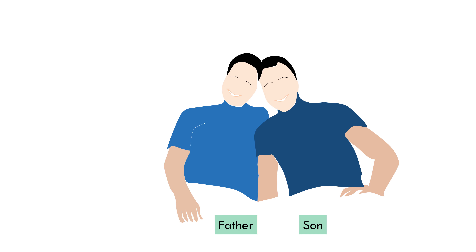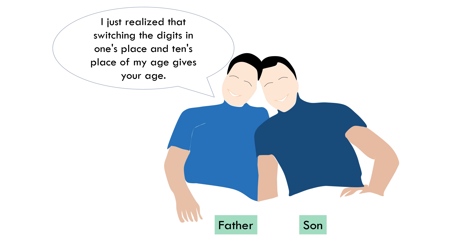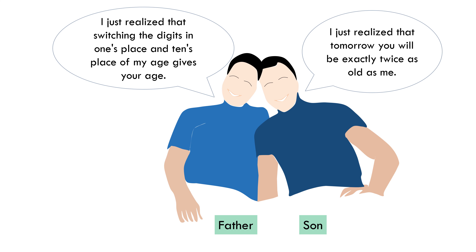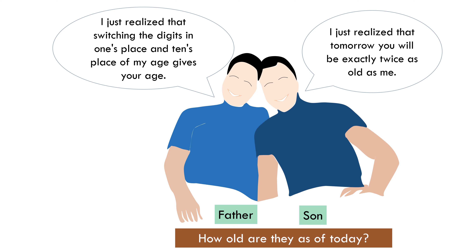The question I have today is going to delight you. There is a father and son talking to each other. The father says to the son: 'I just realized that switching the digits in the ones place and tens place of my age gives your age.' To which the son replies: 'I just realized that tomorrow you'll be exactly twice as old as me.' Your task is to find out their ages today. Don't be too quick to answer — the question definitely requires some thinking.